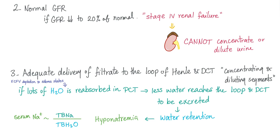Normal GFR: if GFR decreases to 20% of its normal value — which is stage 4 renal failure by definition — the kidney cannot concentrate or dilute urine. Third, adequate delivery of the filtrate to the loop of Henle and the distal convoluted tubule. If lots of water is reabsorbed in the proximal tubule early on, less water reaches the loop and DCT, so less water is excreted, water is retained, leading to hyponatremia with decreased serum sodium.